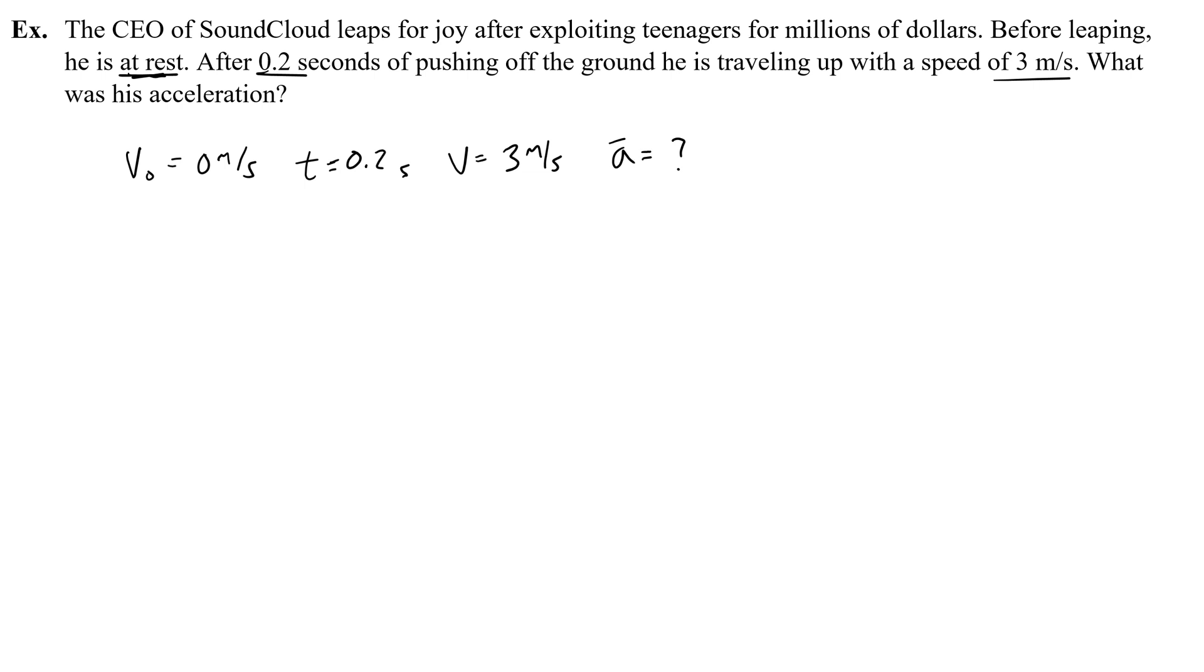And the acceleration is my unknown, the thing I want to find. So now I've got my givens and my unknowns. I go to my equations, and I think, what equation has V naught, T, V, and A in it? Go to your equations and see if you can figure out which one it is. Did you get V equals AT plus V naught? If so, snaps for you.